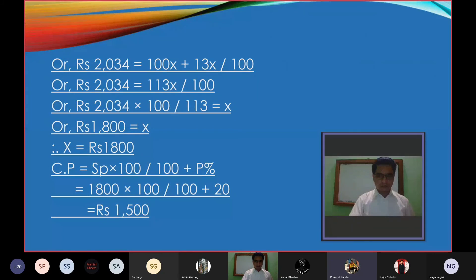Or Rs 2,034 equals 100x plus 13x over 100. Or Rs 2,034 equals 113x/100. Or Rs 2,034 multiplied by 100/113 equals x. Or Rs 1,800 equals x. CP equals SP times 100 over 100 plus profit percent, equals 1,800 times 100 over 100 plus 20, equals Rs 1,500.